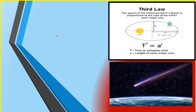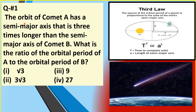Question number one: The orbit of Comet A has a semi-major axis that is three times longer than the semi-major axis of Comet B. What is the ratio of the orbital period of Comet A to the orbital period of Comet B? The choices are: (1) square root of 3, (2) 3 square root of 3, (3) 9, and (4) 27.